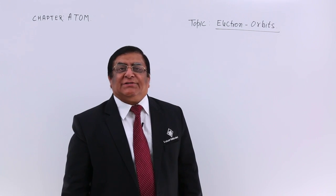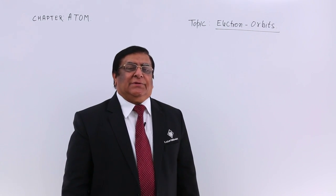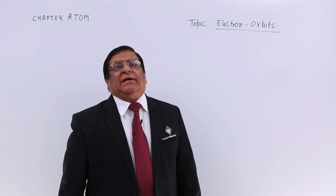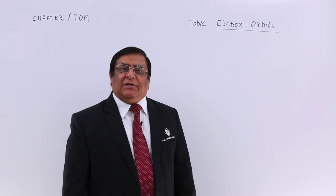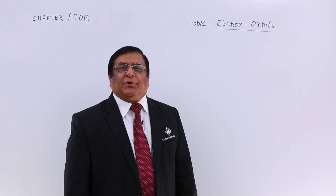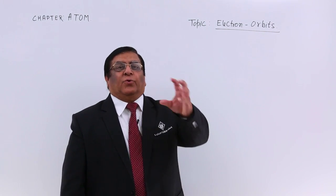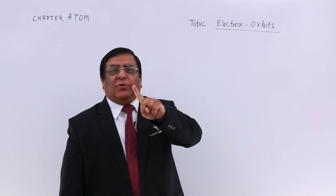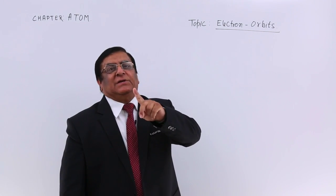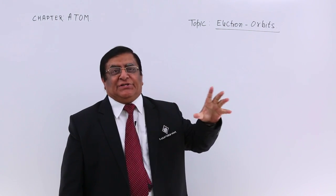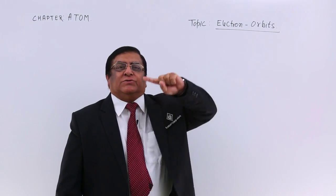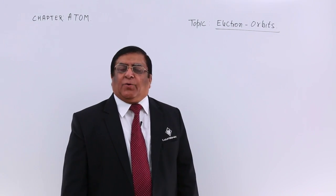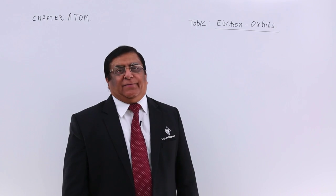The net charge is zero because the positive charge is equal to the negative charges of the electrons. So if the positive charge is 4 in the nucleus, there will be 4 electrons each carrying 1E charge, and those 4 electrons are moving around the nucleus. That was his model.